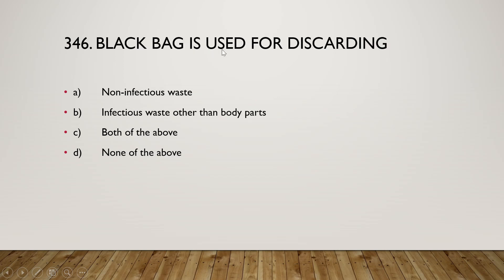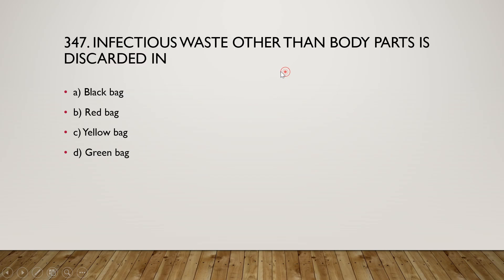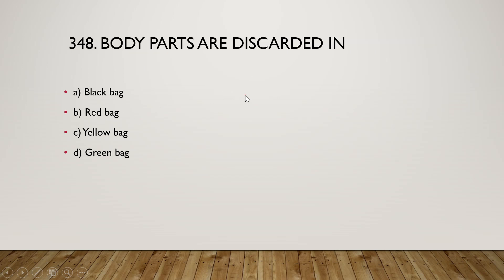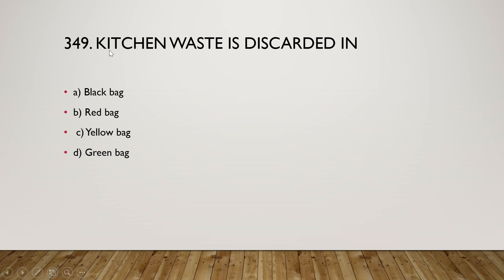Black bag is used for discarding non-infectious waste, infectious waste other than body parts, both, or none? The right answer is option A — black bags are used for non-infectious waste. Infectious waste other than body parts is discarded in the red bag. Kitchen waste is discarded in the yellow bag. And again, the black bag is confirmed for non-infectious general waste.